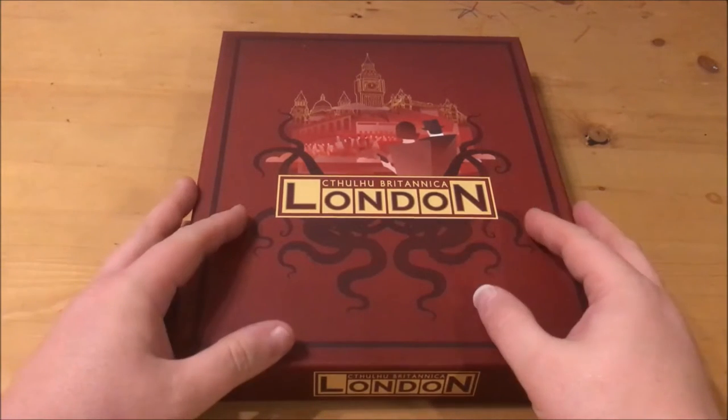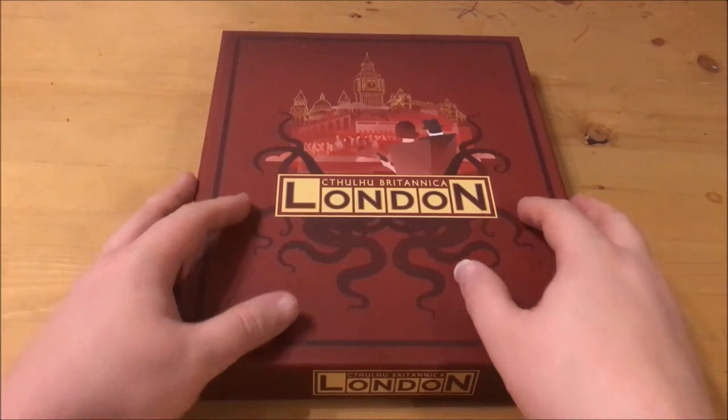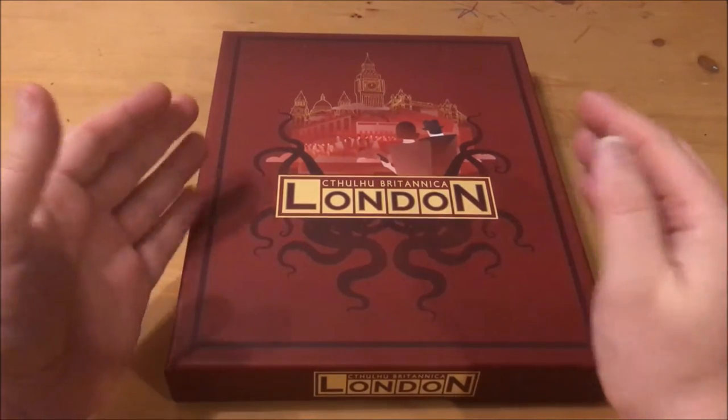Today's review is 2014's Cthulhu Britannica London for Call of Cthulhu 7th edition by Cubicle 7. Originally it was conceived and funded via Kickstarter of which I was a backer but was later available for general purchase.